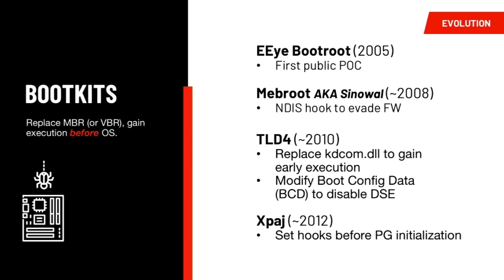To evade both Driver Signature Enforcement and PatchGuard, malware authors began moving to bootkits. Bootkits tamper with very early OS boot code, such as by modifying the MBR or VBR or other OS-specific bootloader code, getting code execution before the OS even starts up. One bootkit, XPatch, was notable — it hooked the system so early that when PatchGuard first initialized, it would scan through the changes and trust them. If you then tried to unhook it or tamper with the rootkit, PatchGuard would crash the box, so it was effectively protected by PatchGuard.